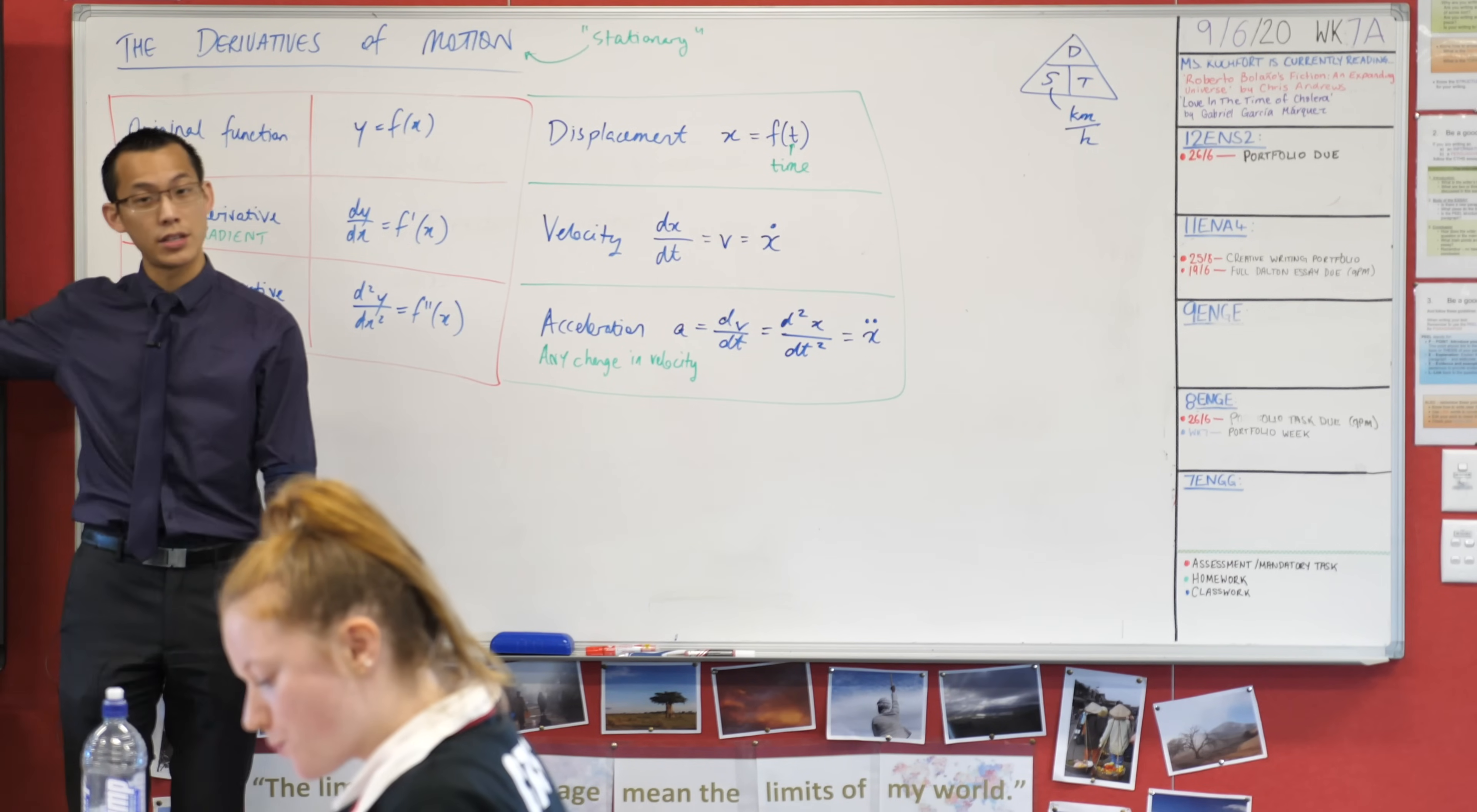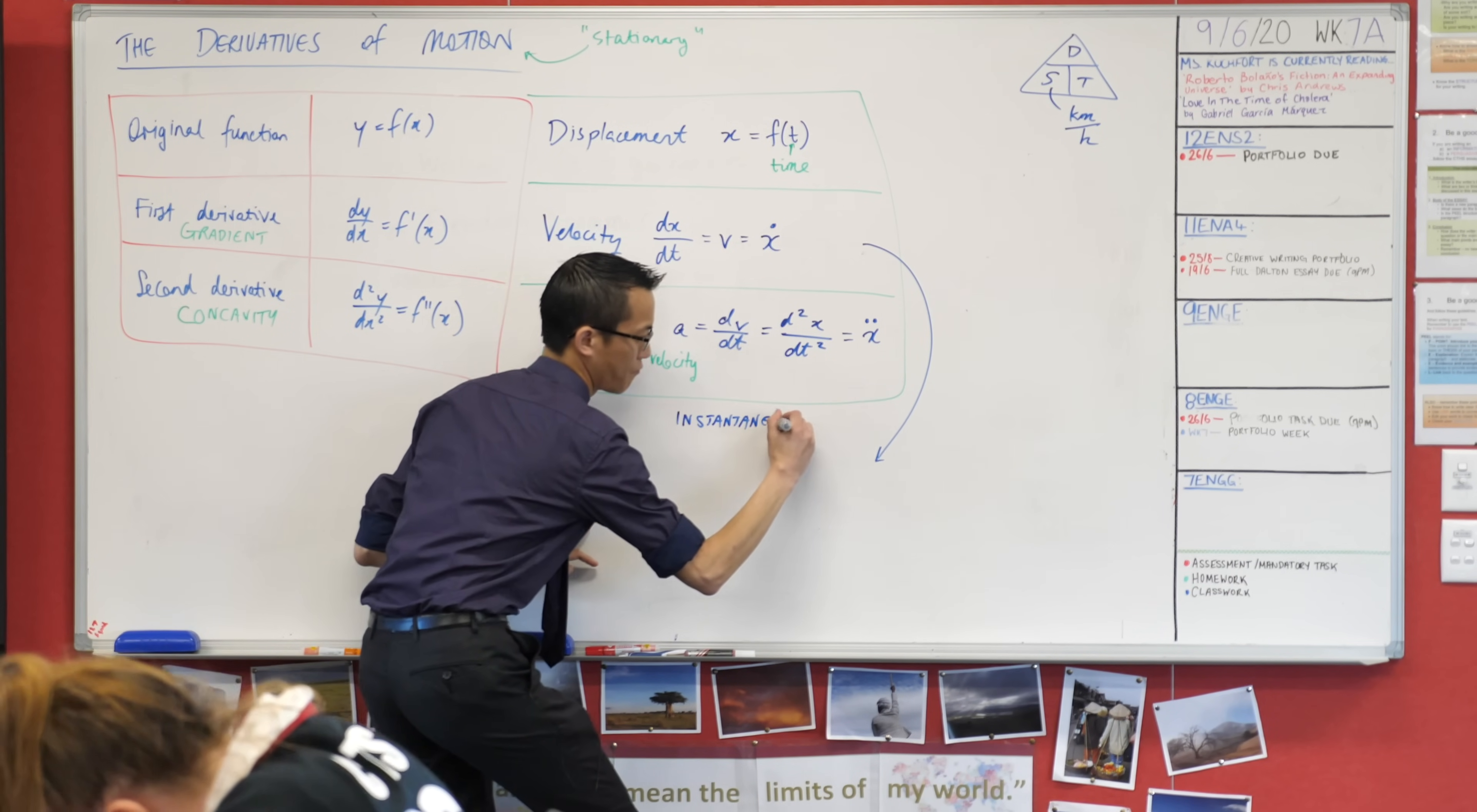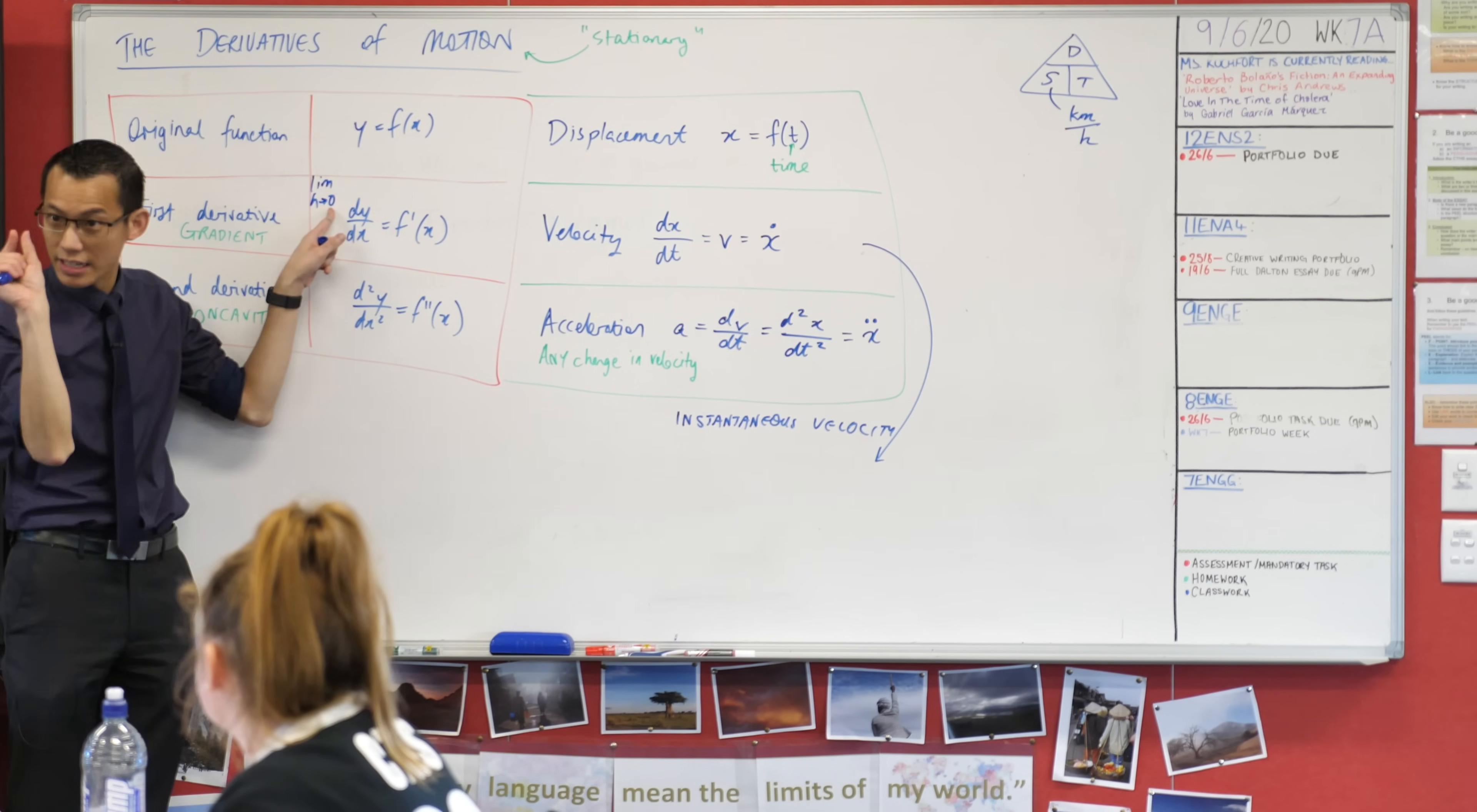Before we leave off, I'm going to give us an example question we're going to work through, because the theory doesn't make much sense until you look at an actual situation. If you've got space on your page, maybe draw an arrow down from the velocity box to the bottom. We need to make a few small notes. This velocity here - dx on dt, v, x dot - is what we call instantaneous velocity.